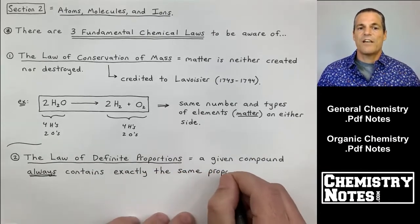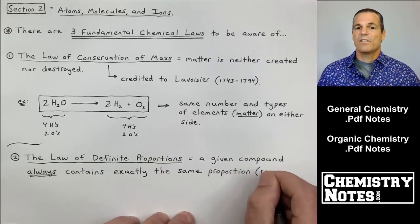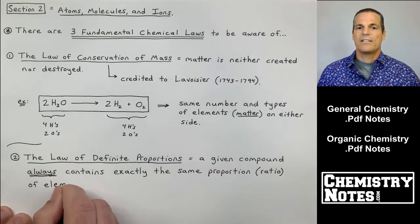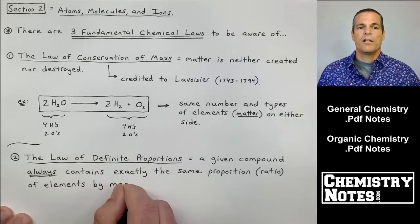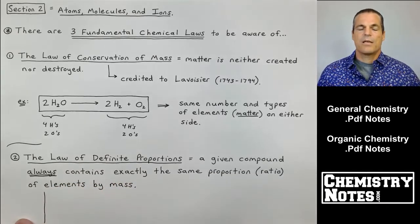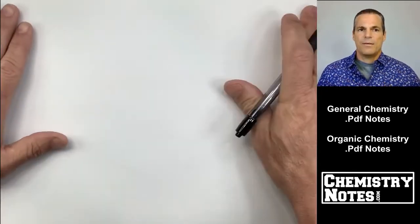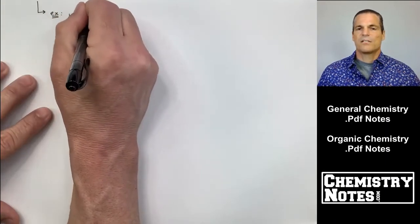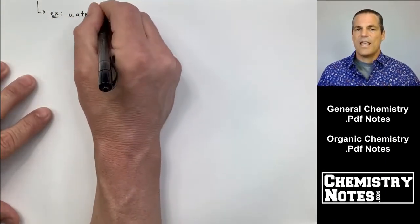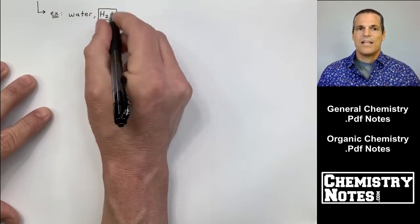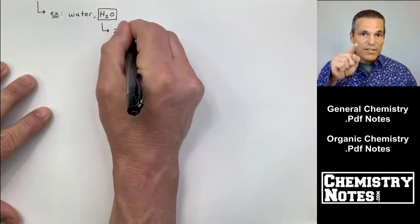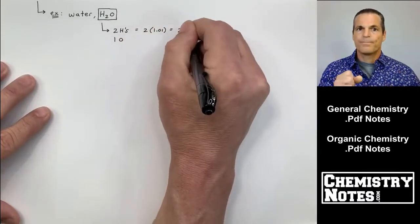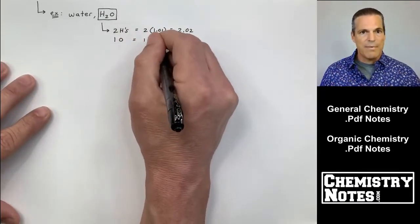Number two, the law of definite proportions. A given compound always contains exactly the same proportion or ratio of elements by mass. For example, why don't we consider a very popular molecule? Let's consider water. Water is H2O.